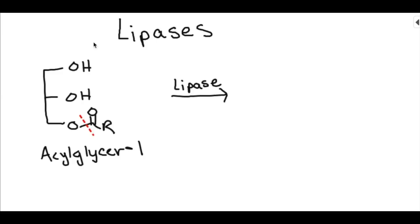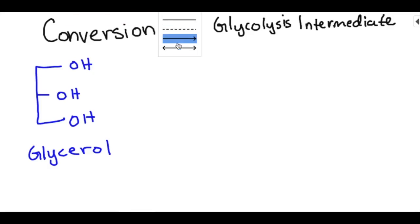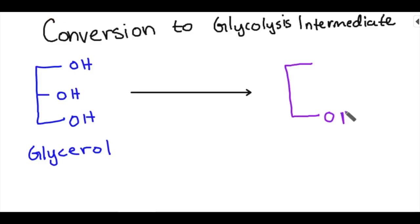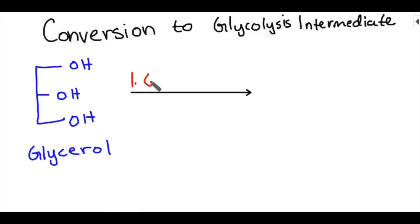Last but not least, the third lipase comes in and removes that last acyl group, leaving you with just the glycerol molecule. So what happens to glycerol? Glycerol gets converted into a glycolysis intermediate that you're familiar with — DHAP, dihydroxyacetone phosphate — and this occurs over two steps.